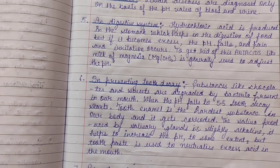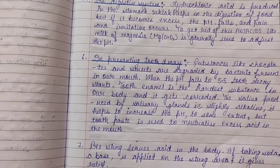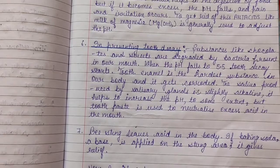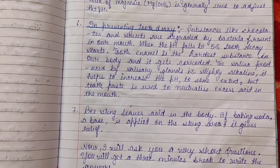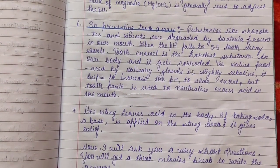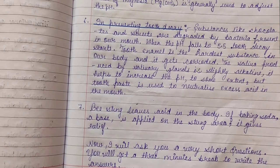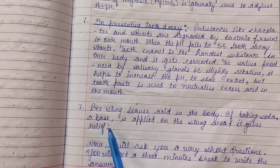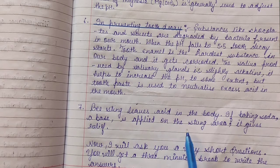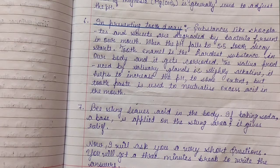Number 7: Bee sting leaves acid in the body. If baking soda, a base, is applied on the stung area, it gives relief.